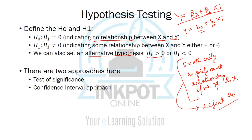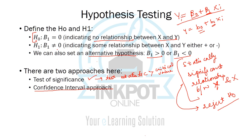We can also set an alternate hypothesis where beta 1 is greater than 0, meaning the true population parameter has a positive coefficient, or it could be a negative coefficient. Just like in the case of sample means, there are two approaches here: the test of significance approach, where we create a test statistic and see if it exceeds a critical value, and the confidence interval approach, where we check if the hypothesized population parameter falls within the confidence interval.